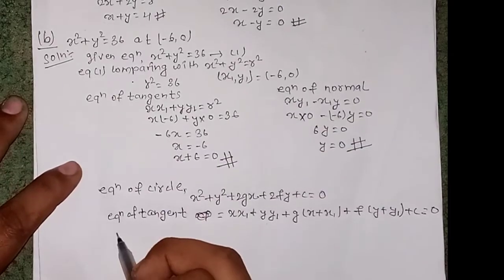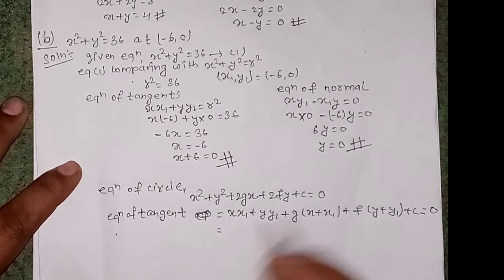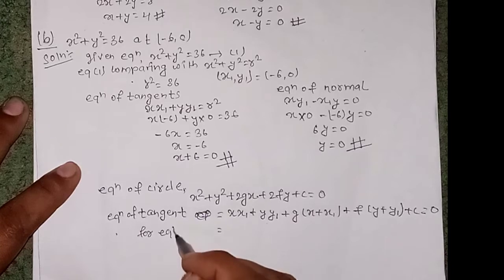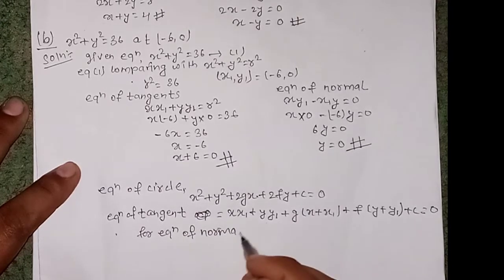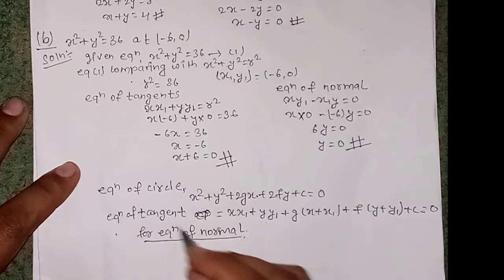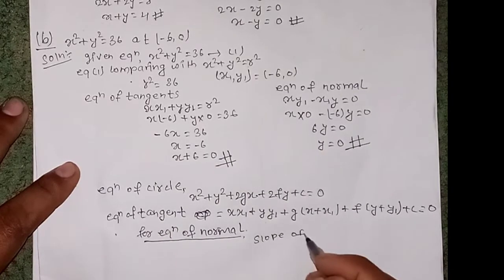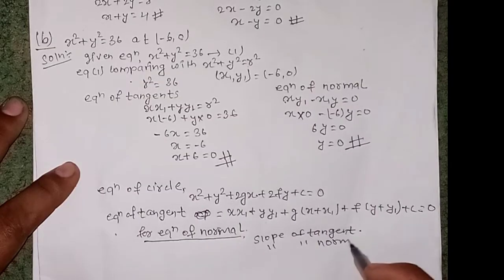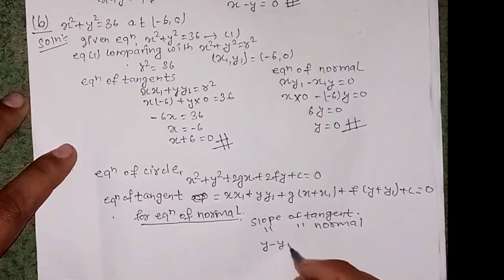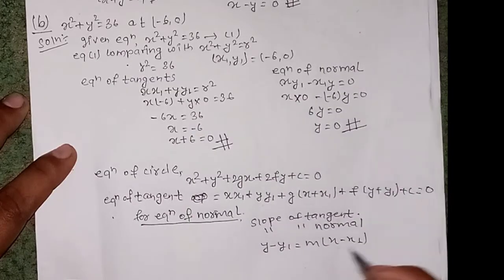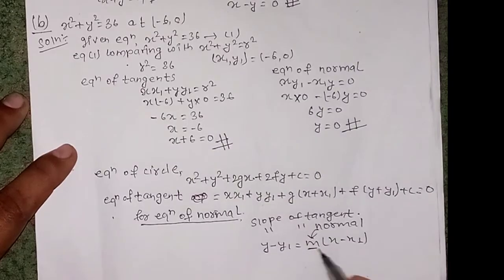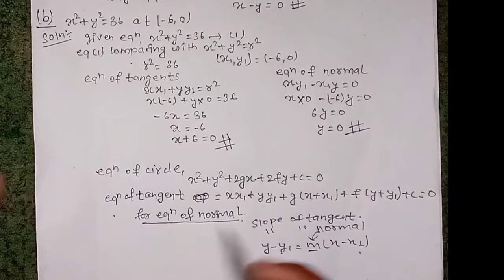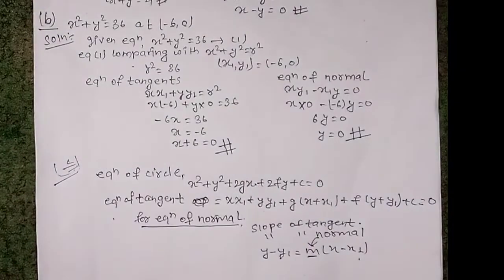For the equation of the normal, we derive it from the tangent equation. We find the slope of the tangent, then the slope of the normal. After finding the slope of normal, we use y - y₁ = m(x - x₁). This special formula is used for the c-number type questions.